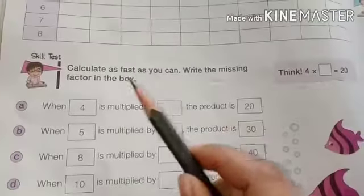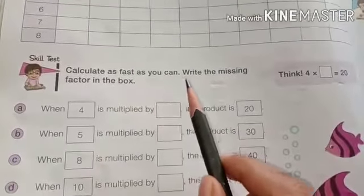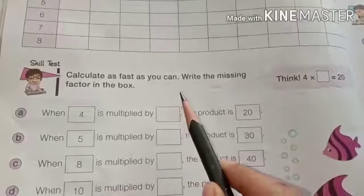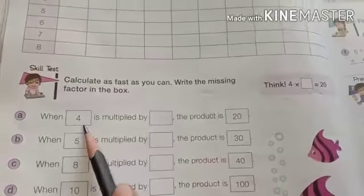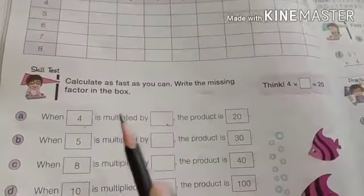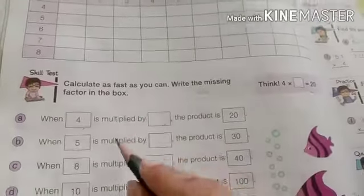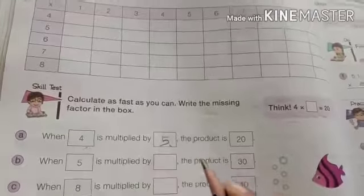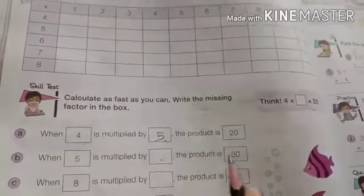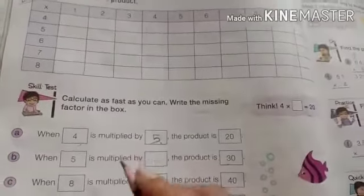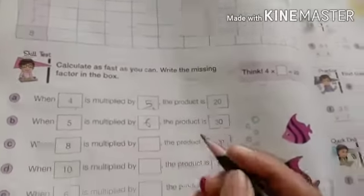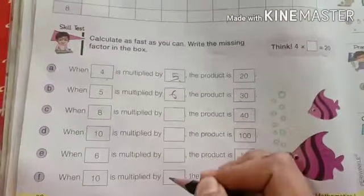The next, calculate as fast as you can. Write the missing factor in the box. 4 dash 20 means 4 multiply with what? The answer will be get 20. We know that 4 5's are 20. 5. 5, how many is 30? 5 6's are 30. Like this we have to solve. This is your homework.